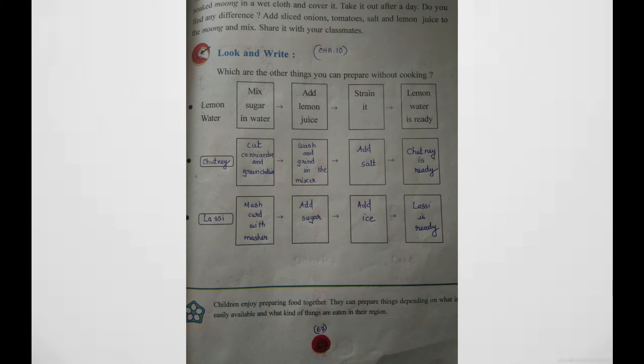Next one, we are going to make mash curd with masher, add sugar, you can add ice. It is ready. Today you will prepare any one of these items and serve to your beloved parents.